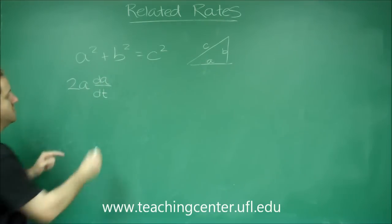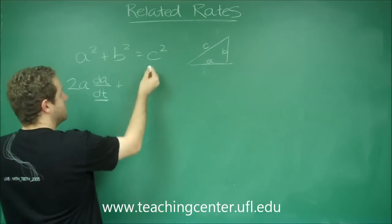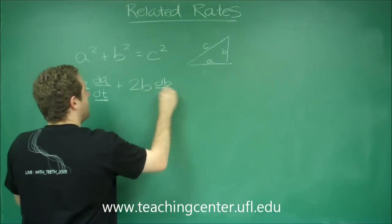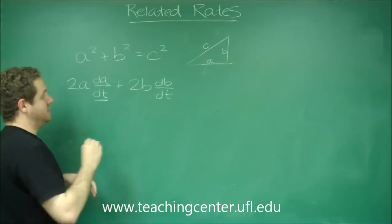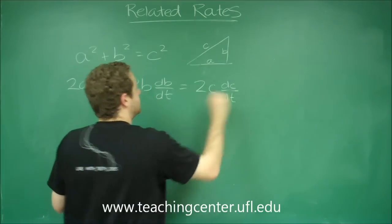Because you're doing the derivative with respect to time. Similarly for the other ones, the derivative of B squared is 2B but you have to multiply that by DB DT and the derivative of C squared is 2C times DC DT.